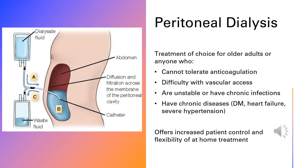Peritoneal dialysis is the treatment of choice for older adults or anyone who cannot tolerate anticoagulation, has difficulty with vascular access, is unstable, or has chronic infections or chronic diseases like diabetes, heart failure, and severe hypertension. It offers increased patient control and flexibility for at-home treatment. If you have a peritoneal dialysis patient on the unit, a dialysis nurse will maintain that for you, unless you work at a smaller hospital where nurses on the unit are trained to do so.